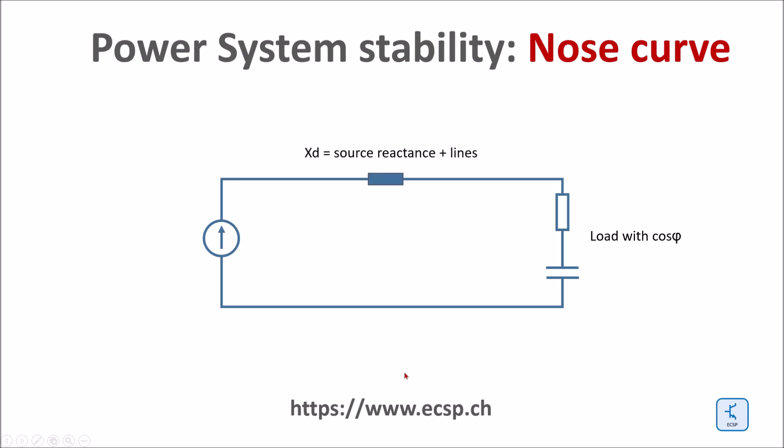Here are the very basic parameters and models needed to drive the nose curve. There is a source and there is a load, and between the source and the load we have a reactance which is the source reactance and possibly some line reactances. The load may have a constant cosine phi and it is variable. The nose curve is an interaction between the variable load, the source voltage E, the load voltage V, and the voltage across the reactances between the source and the load. The voltage across XT is directly proportional to the current through the load.